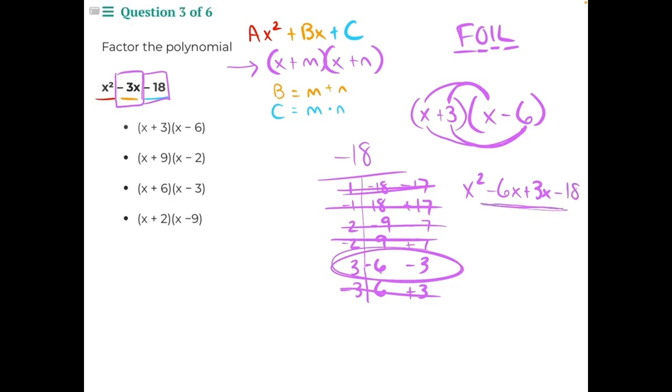So then we simplify, negative 6x plus 3x would give us negative 3x. And now we have an equation that matches the equation that we started with. So that means our first option is our correct answer.